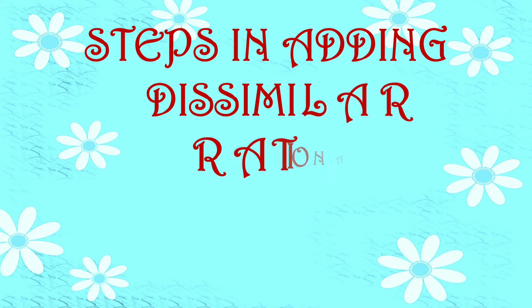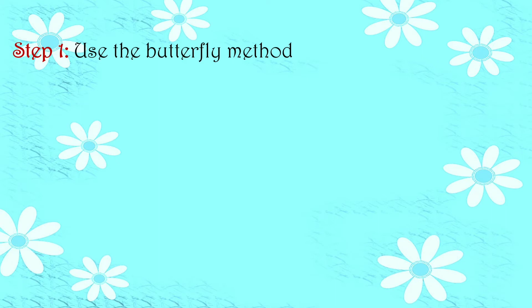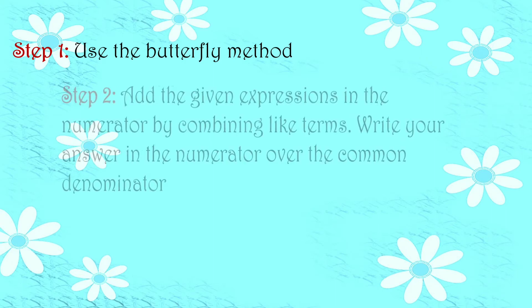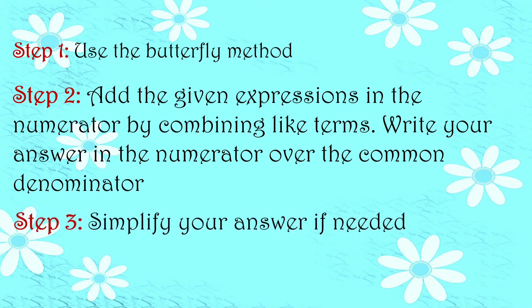So steps in adding the similar rational algebraic expressions. Step 1: use the butterfly method — ang gagamitin ko ay butterfly method, hindi yung LCD, kasi medyo mahaba-haba kasi. At least pag butterfly method, diretsyo na kaagad. Then step 2: add the given expressions in the numerator by combining like terms. Write your answer in the numerator over the common denominator. So same procedure lang kapag naging similar RAE na siya. Then step 3: simplify your answer if needed.